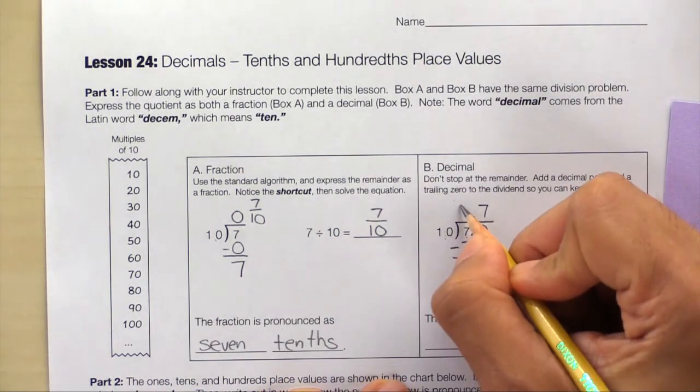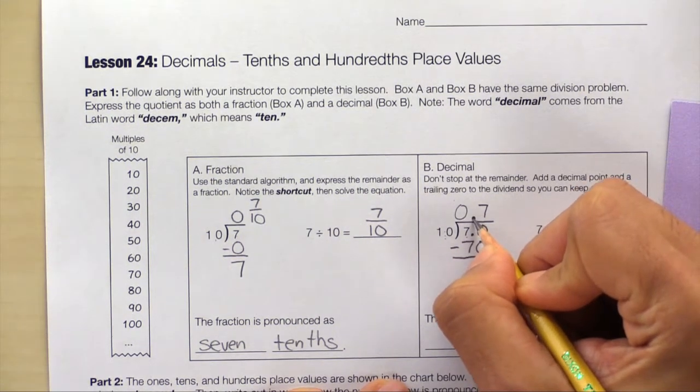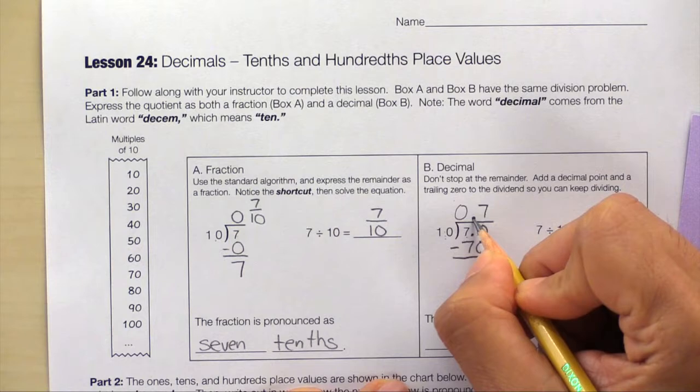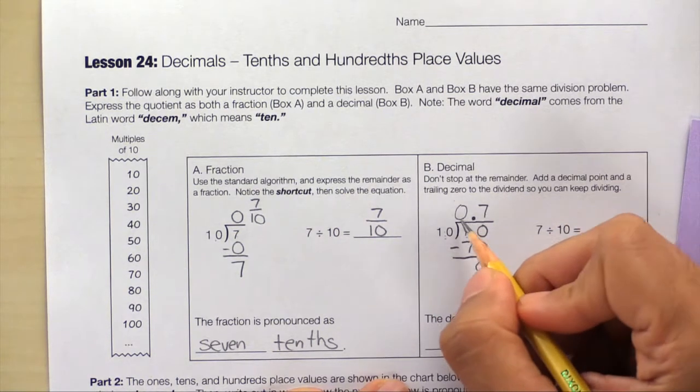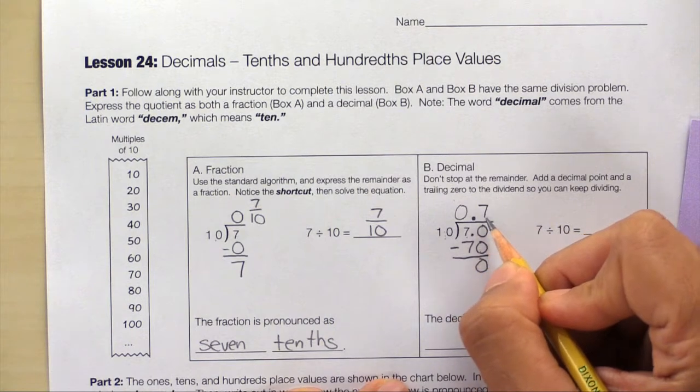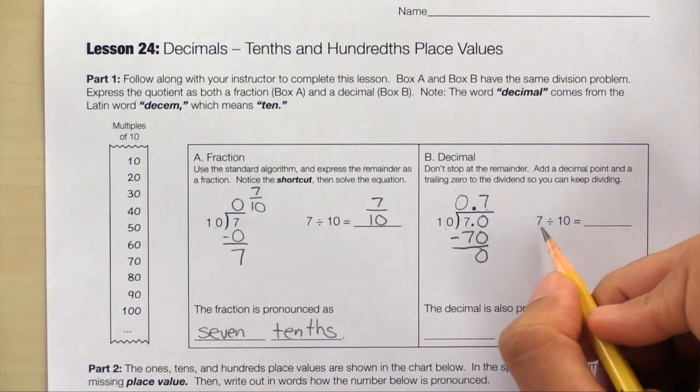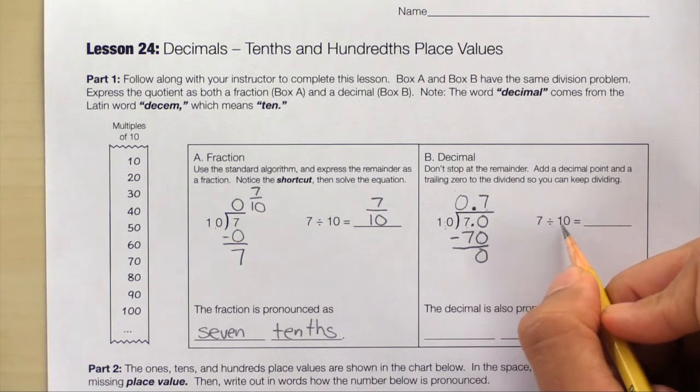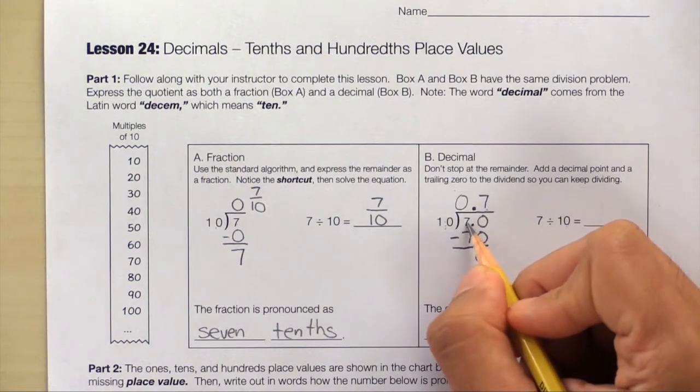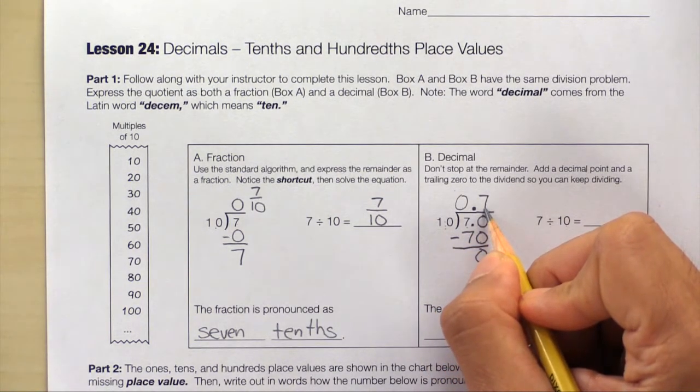I'm going to add a leading 0 in front of our quotient as well so that people notice that there's a decimal point there. And one way to pronounce this number is 0.7. And we'll learn another way to pronounce this number in a few moments. Let's solve the problem horizontally. Here we have 7 divided by 10 and 7 divided by 10 gave us 0.7 as our quotient.